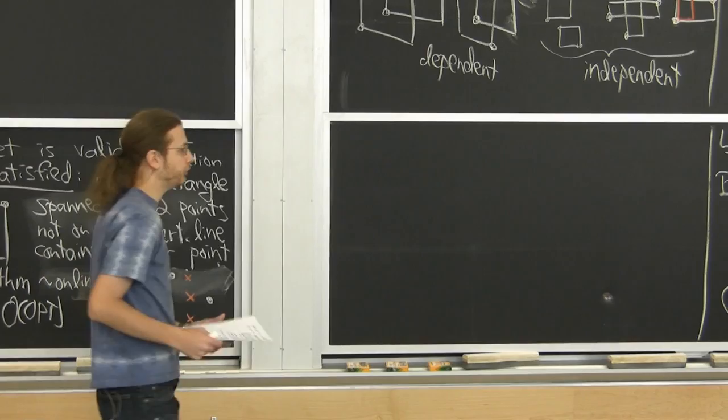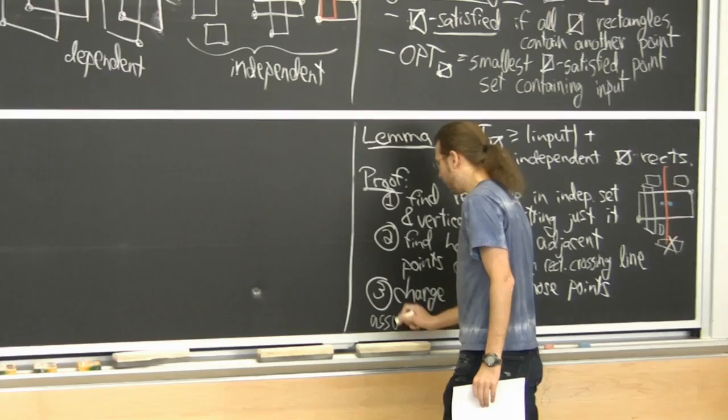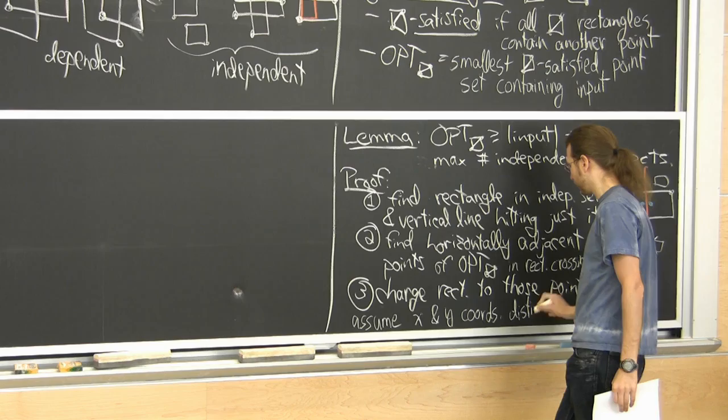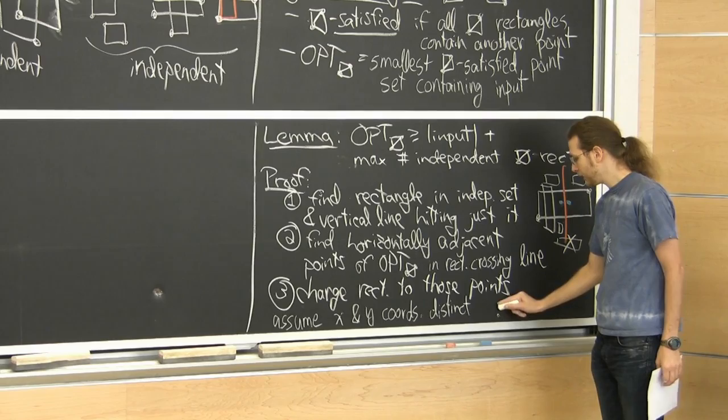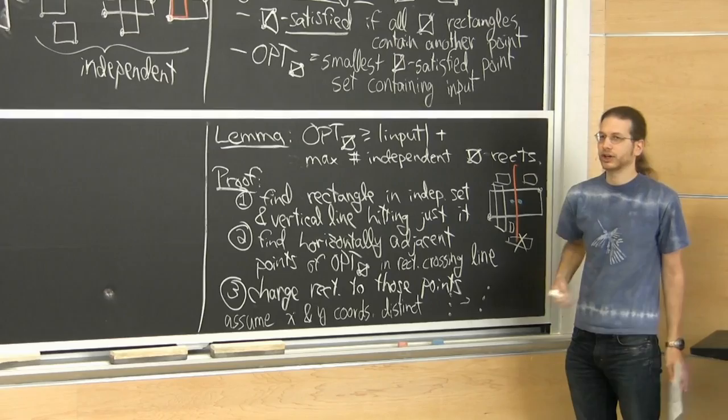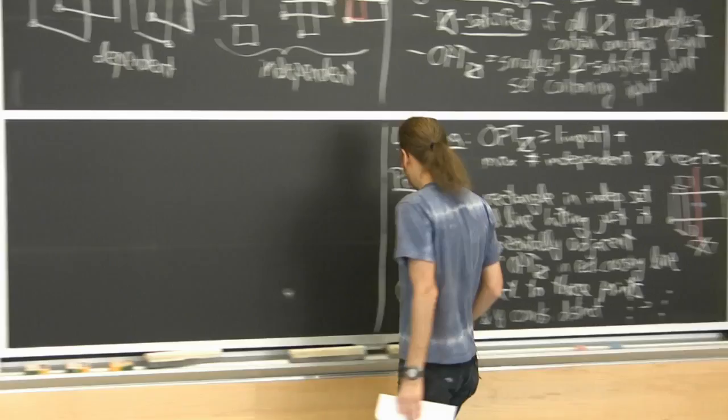Throughout, we assume all x and y coordinates are unique. If you have lots of accesses to the same key, imagine them as accesses to slightly different keys — just skew them a little bit. This doesn't change any of the bounds much. It's at least a simplifying assumption to make the proofs cleaner.